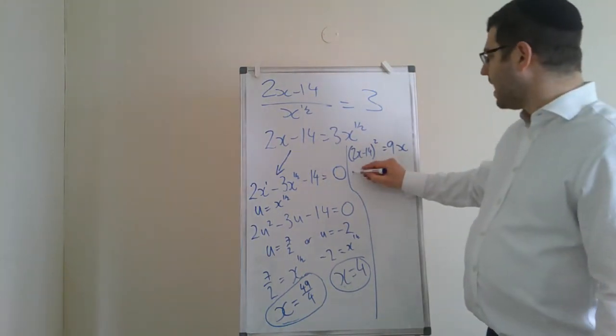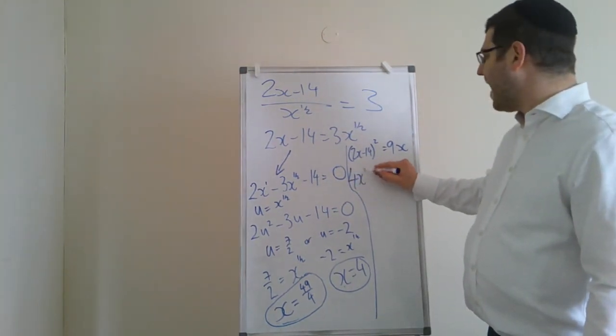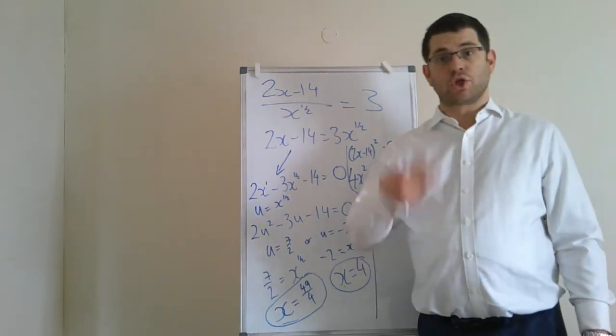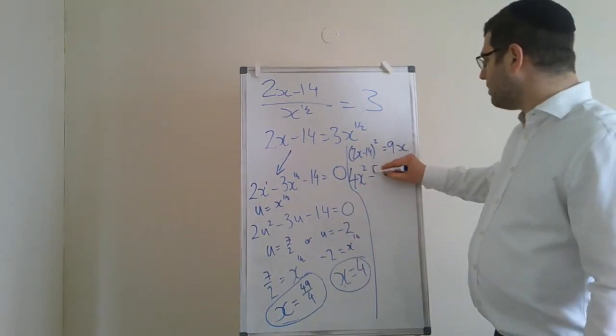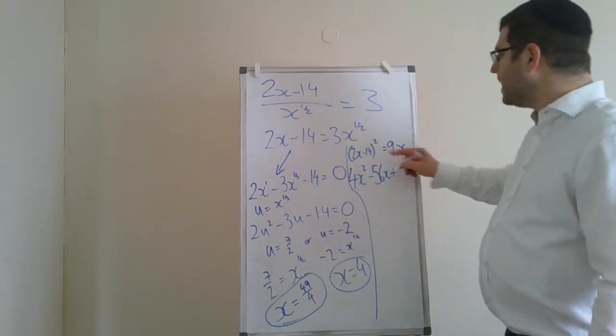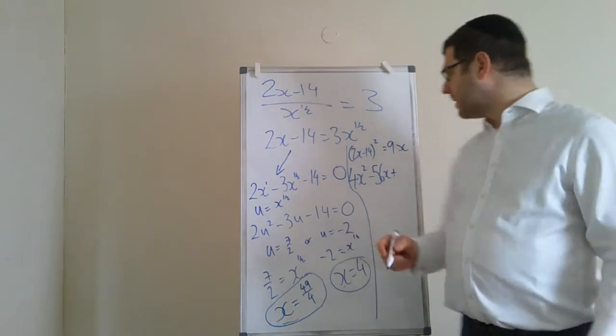Let's multiply this out. We have 4x squared minus 14 times just 28, but there's two of those terms, so that becomes 56. Minus 14 squared is 196.